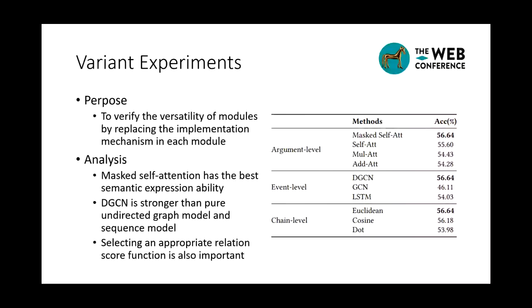We also expect that our approach still works when we switch various connection modeling mechanisms at different levels. We can draw conclusions as follows. Our approach is general enough to handle argument-level connections by various strategies, and the masked self-attention is more effective. DGCN is stronger than the pure undirected graph model and the sequence model LSTM. Last, there is performance variation between different score functions, and selecting an appropriate relation score function is also important for the final result.